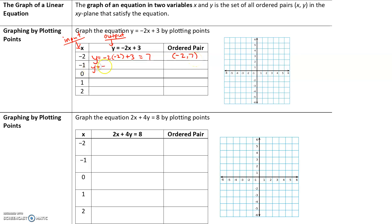If we plug in x = -1, we get y = -2(-1) + 3. Negative 2 times -1 is 2, and 2 + 3 = 5, so our ordered pair is (-1, 5). Next, the input is 0: anything times 0 is 0, and 0 + 3 = 3, so our ordered pair is (0, 3). Notice we're decreasing the y value by 2 each time: 7, 5, 3.